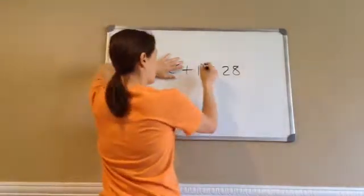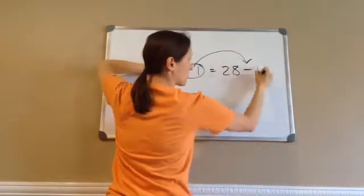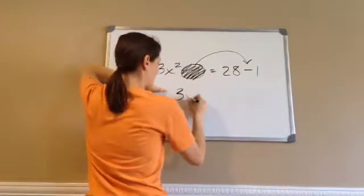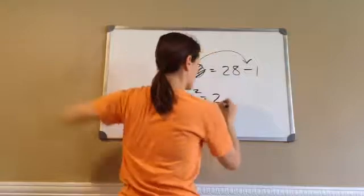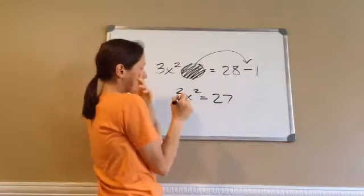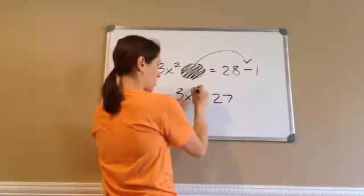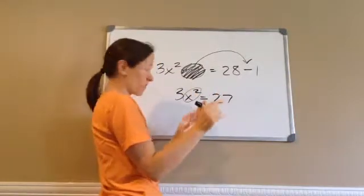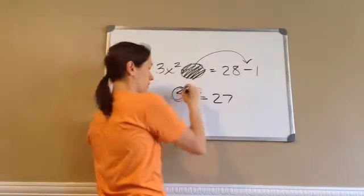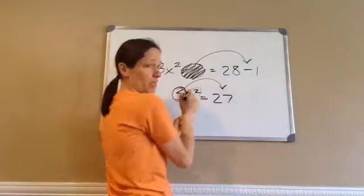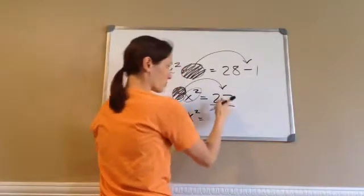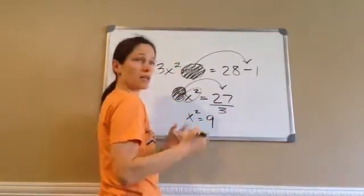We move that across. This plus 1 moves across and becomes minus 1, just like we would normally do things. So, now I've got 3x squared equals 28 minus 1, which is 27. Now, stay with me. I think the best thing is, let's keep the x squared together still for now. The next step is, this is 3 times x squared. So, I'm going to move this times 3 across the equal sign, and times 3 becomes divided by 3. Now, it's x squared equals 27 divided by 3 is 9.